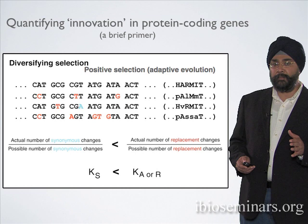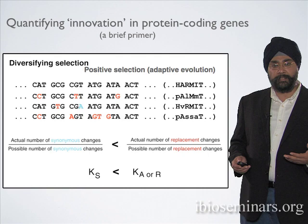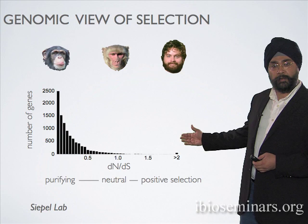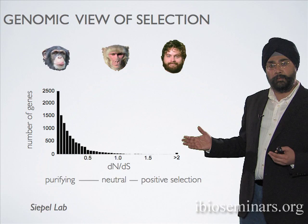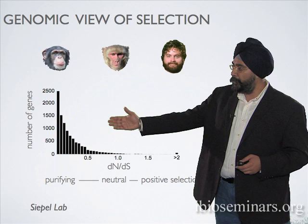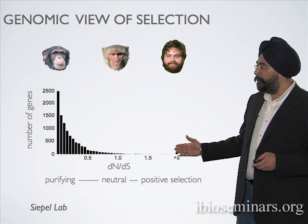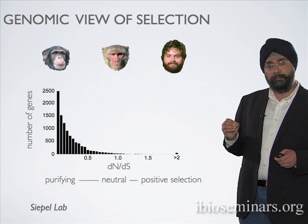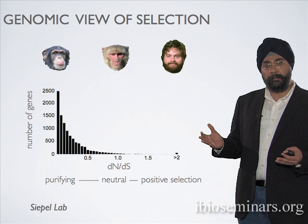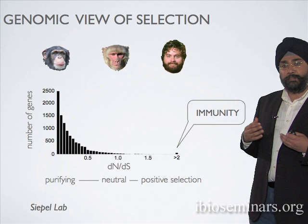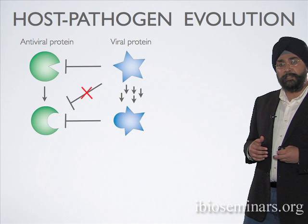If you calculate the ratio of replacement to synonymous rates for all genes compared across three sets of species — our own genome, the rhesus macaque, and the chimpanzee — you get a histogram reflecting the selective constraints on all protein-coding genes. There's a large number of genes on the left-hand side, reflecting that purifying selection — a dearth of replacement changes — is the norm. We're interested in the small set of genes on the right that have undergone much faster replacement changes, almost breaking the speed limit of evolution. When you look closely at this category, immunity genes are really over-represented, because these genes have been acted upon repeatedly by natural selection.